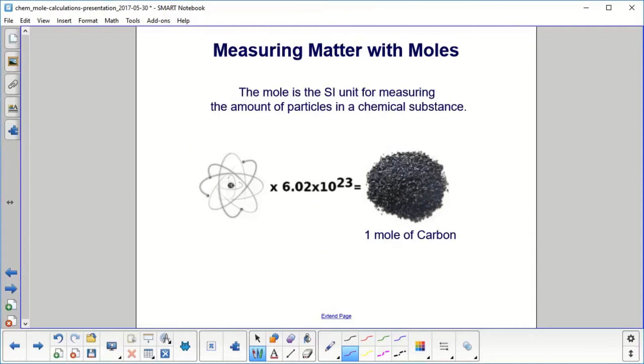The mole is the SI unit where SI is System Internationale. This is how we do our standards. For example, kilogram is the SI unit for mass. Meter is the SI unit for distance. Kelvin is the SI unit for temperature. And mole is the SI unit for measuring the amount of particles in a chemical substance.